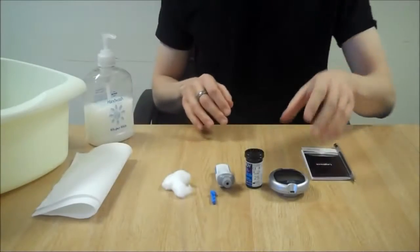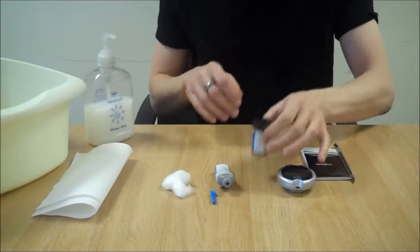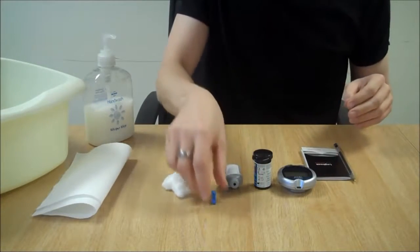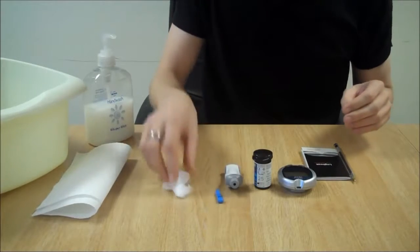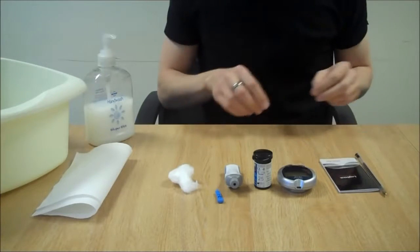Step 1: Prepare your kit. You will need a meter, test strips, a finger pricker or lancing device, a lancet, cotton wool, and a monitoring diary to record the results.